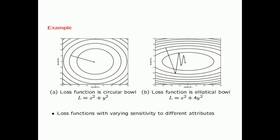Here I have shown two examples of contour plots. These contour plots depend upon two input variables, x and y. The contour line indicates that the value of the loss function is the same all along that contour line. The first loss function is x squared plus y squared. In this case, we have a loss function which looks like a circular bowl and the contour lines are perfectly circular. However, the second loss function is only a minor difference: l is equal to x squared plus 4y squared.